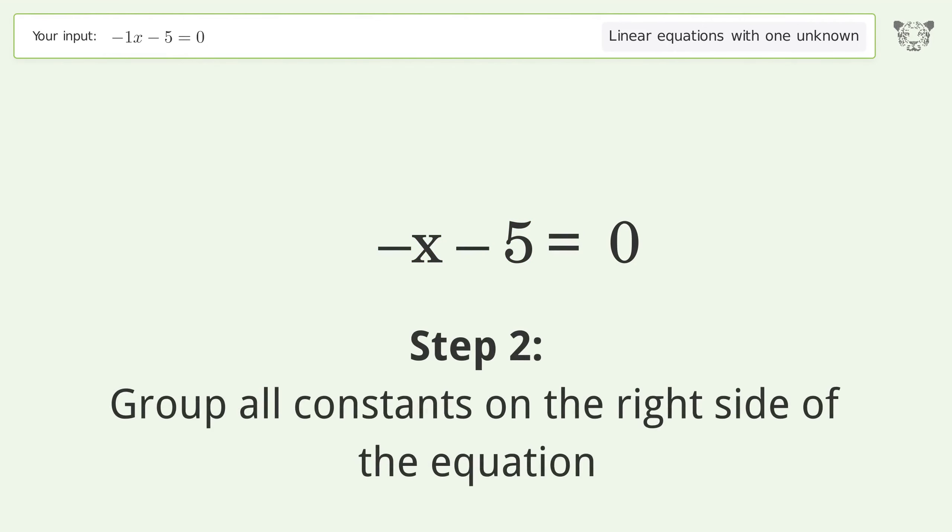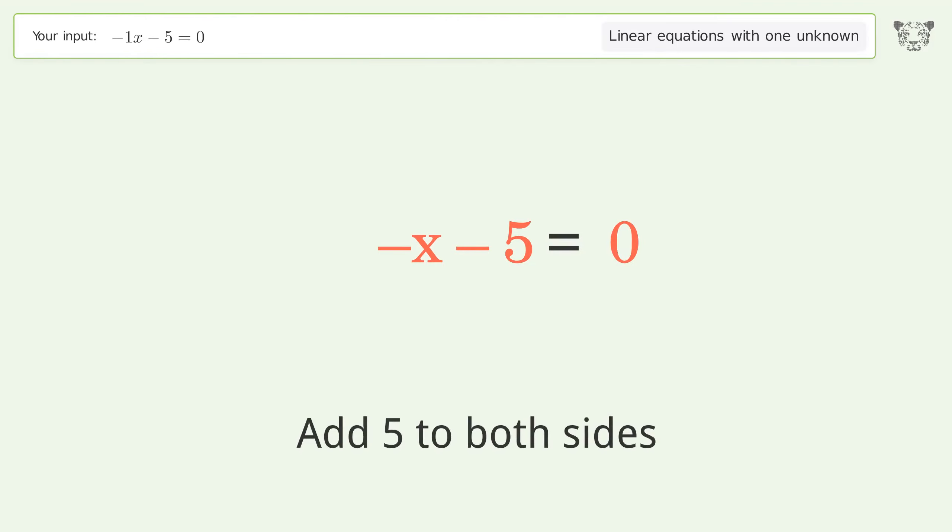Group all constants on the right side of the equation. Add 5 to both sides. Simplify the arithmetic.